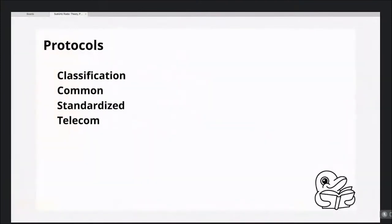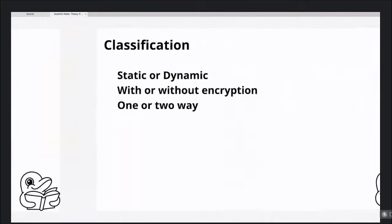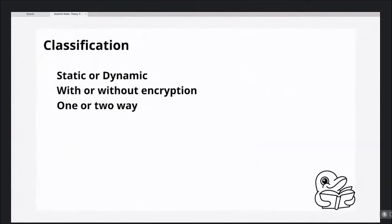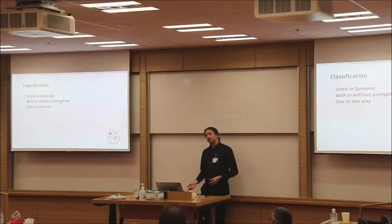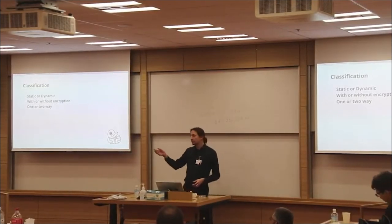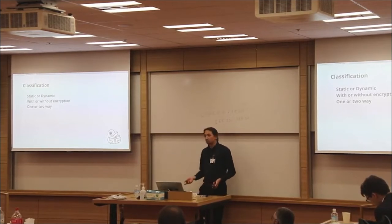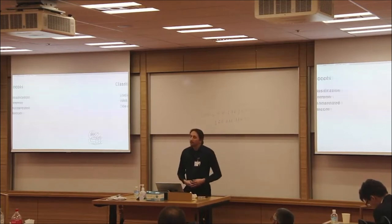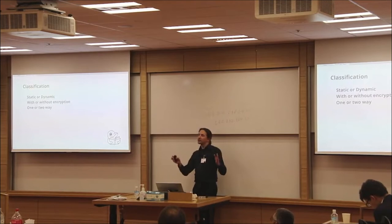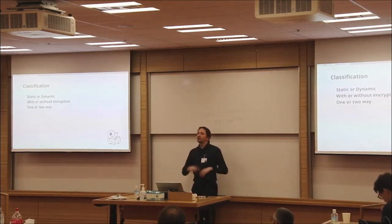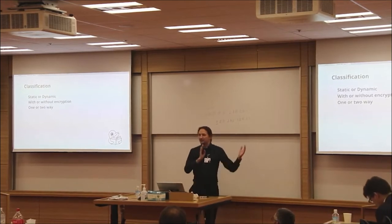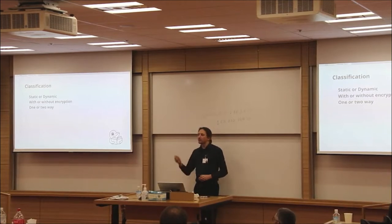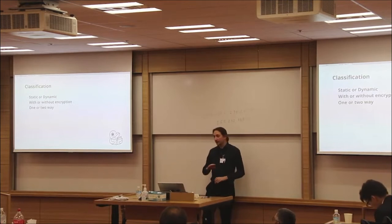Let's talk about protocols — what exactly we can receive. Let's start with classification. Most sub-Gigahertz protocols start with a really simple question: is it static or dynamic? Static protocols — for example, you have a doorbell and a button. You need some kind of identifier to link this button with the doorbell — that's it. You have a static code, for example 24 bits transmitted when you press the button and not transmitted when you don't. A lot of protocols on the market that do simple things like opening garage doors or enabling fans are actually static — they don't have any dynamic component.